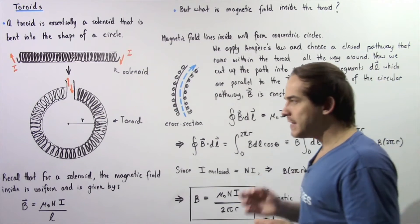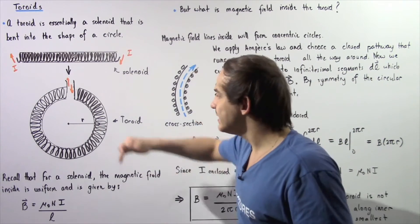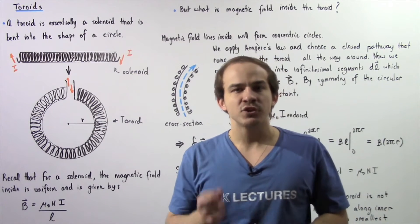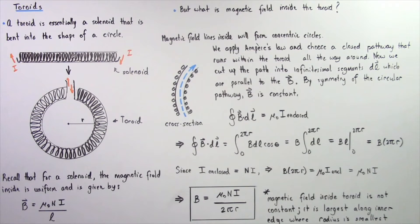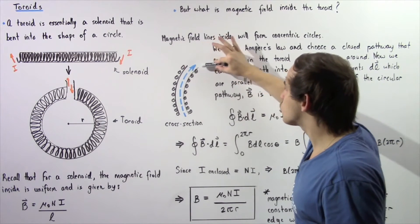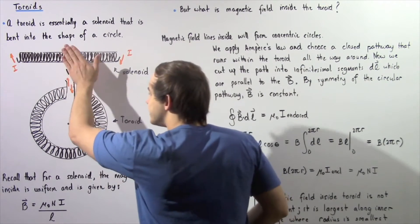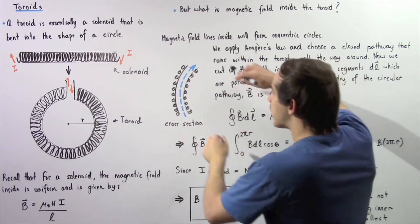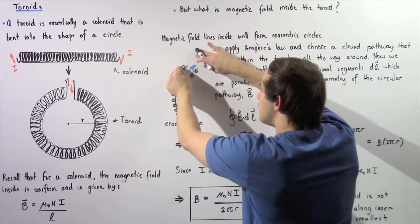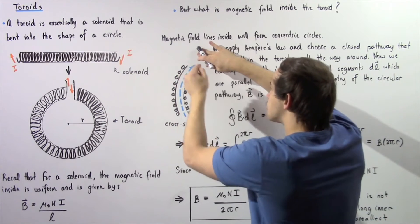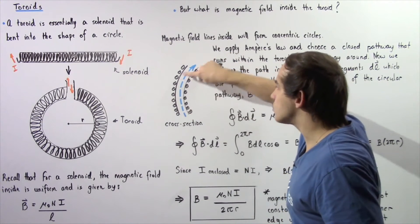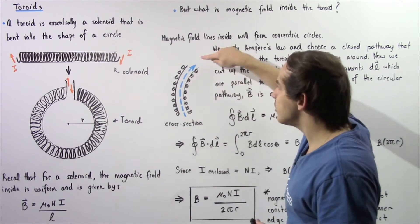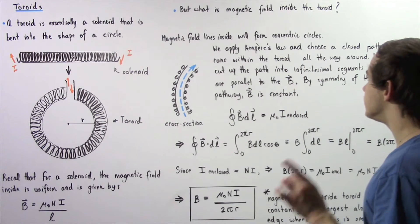To determine the magnetic field resulting from the electric current in the wires of the toroid, we apply Ampere's Law. We choose a closed pathway that runs within the toroid all the way around, as shown in the cross-section diagram. Slicing the toroid, we see that in one region the electric current is coming out of the page, and in the other region it is looping back into the page. We choose a circular pathway around the toroid that coincides with the magnetic field line.